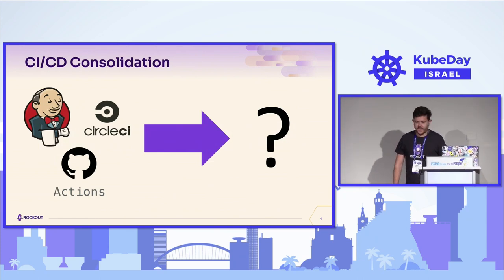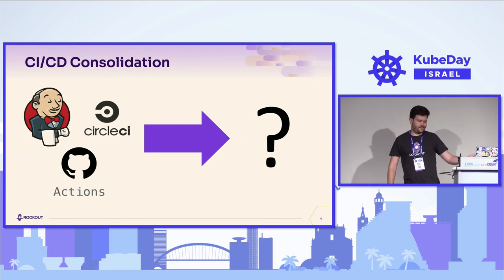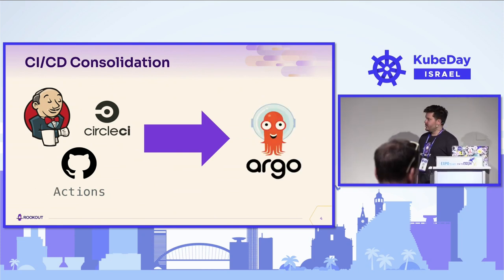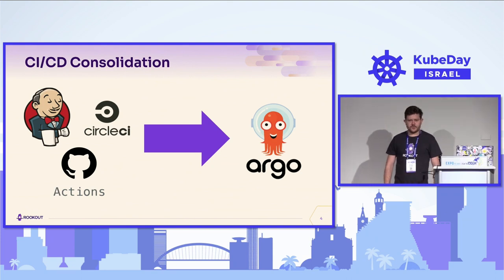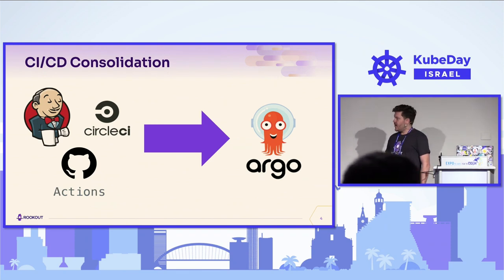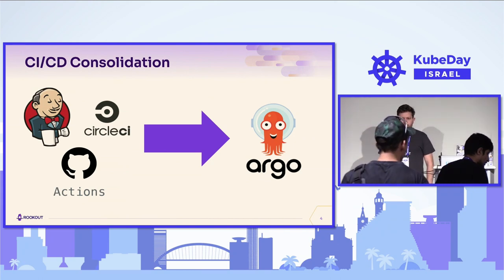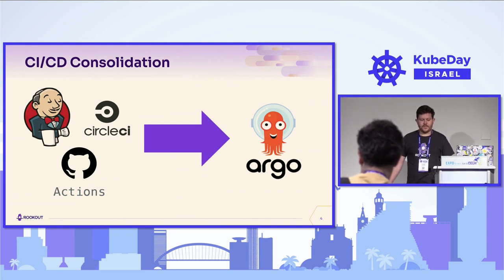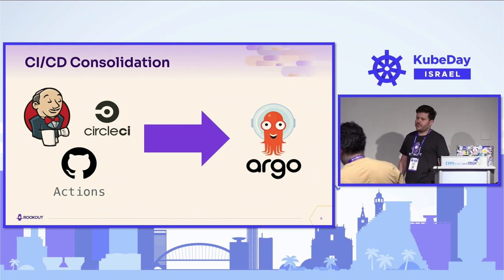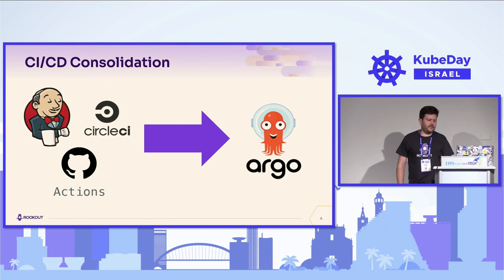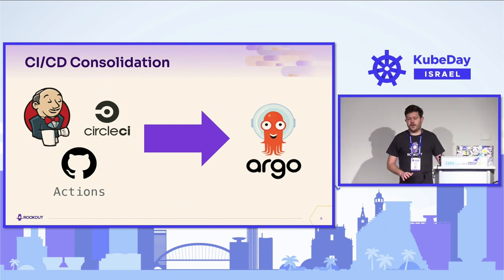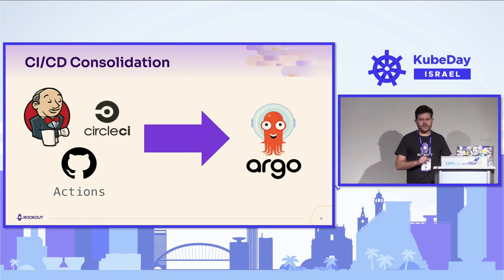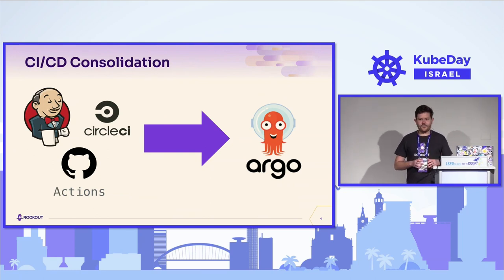So we decided to consolidate our CI/CD tools. You can already guess which tool we chose. But it wasn't that simple — our developers had a lot of experience with all those CI/CD tools, and the expectations from the new tool were very high. The only request that came from the DevOps team was to make it a Kubernetes-native tool to integrate fully into our ecosystem. There are not many Kubernetes-native CI/CD tools, so we started with Argo.